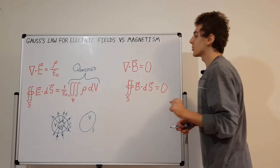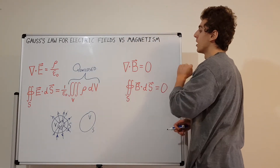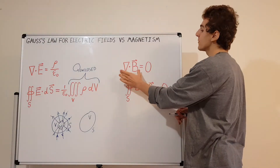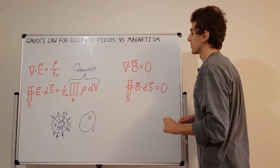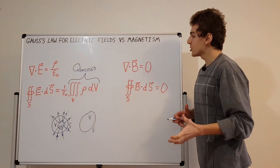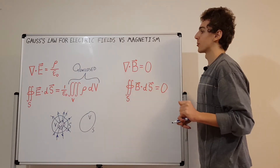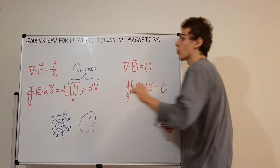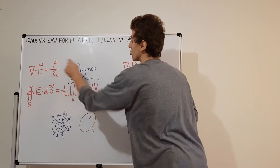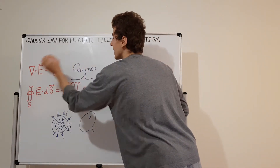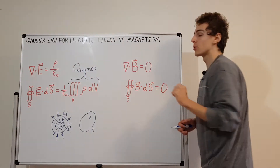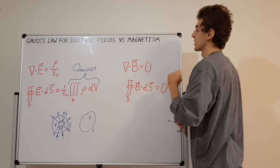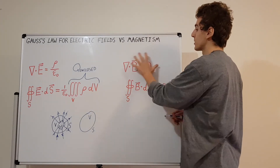Now let's look at the right hand side for magnetism. The divergence of the magnetic field is zero — exactly what we'd expect if there were no charge density. If rho were zero, the divergence of the electric field would also be zero. So the magnetic equation is saying there are no magnetic charges.